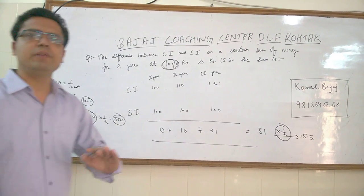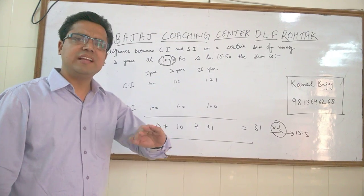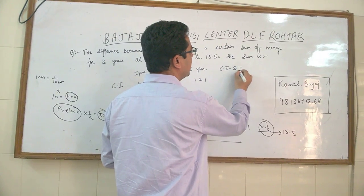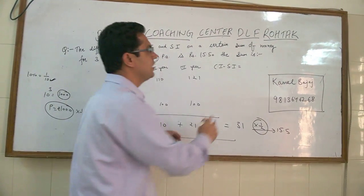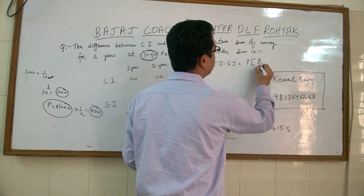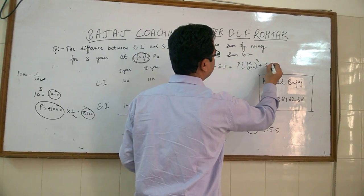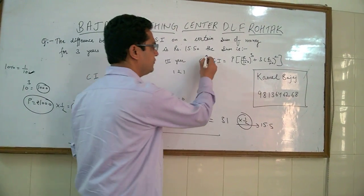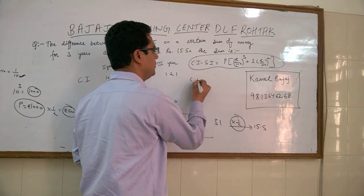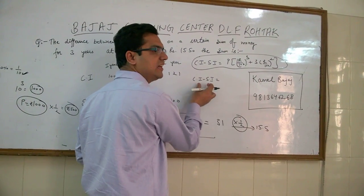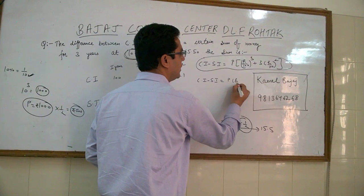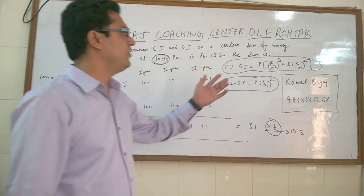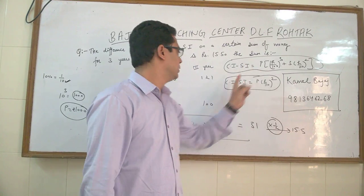We can also do this question by a formula — that is a method given in many books. The difference between CI and SI for 3 years is given by P into (R/100)³ plus 3 into (R/100)². The formula for 2 years: the difference between CI and SI is P into (R/100)². But in competitive exams, these formulas are very difficult to remember, especially the 3-year formula, so you can do it by logic instead.